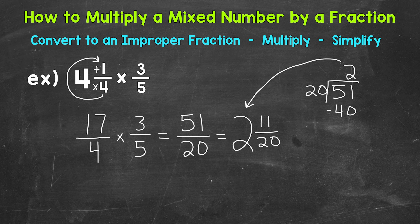2 times 20 is 40. So let's subtract to get our remainder. 51 minus 40 is 11. So we get 2 remainder 11. That remainder of 11 is the numerator, part of the fractional part of the mixed number. And then we keep our denominator of 20 the same.